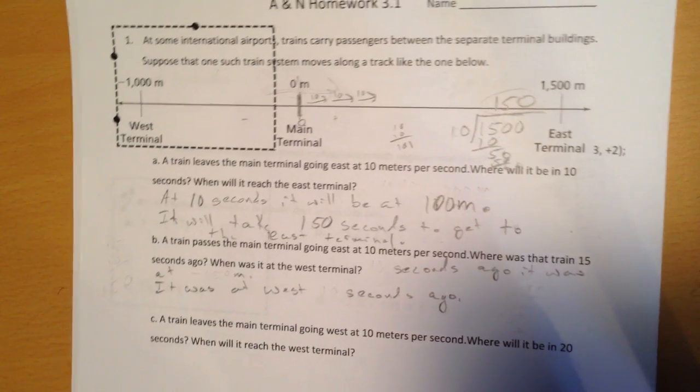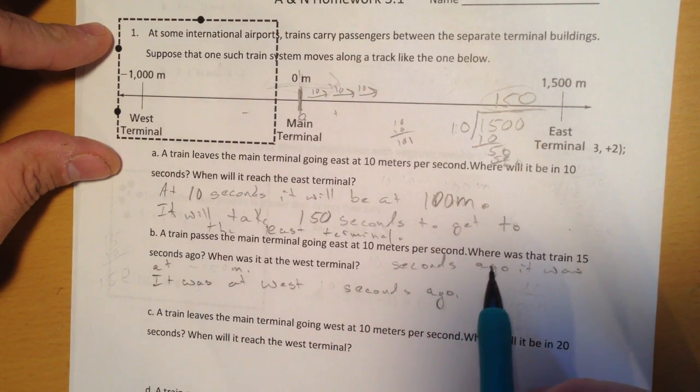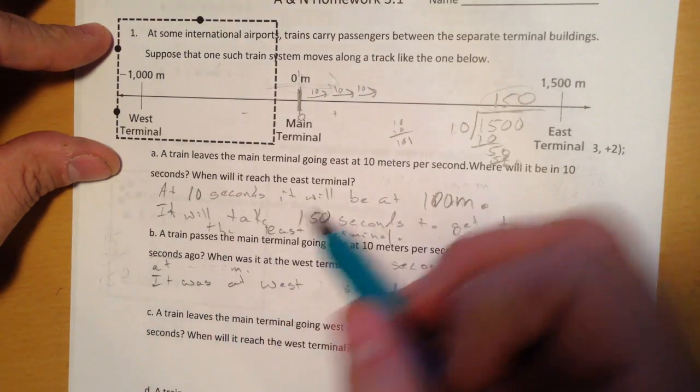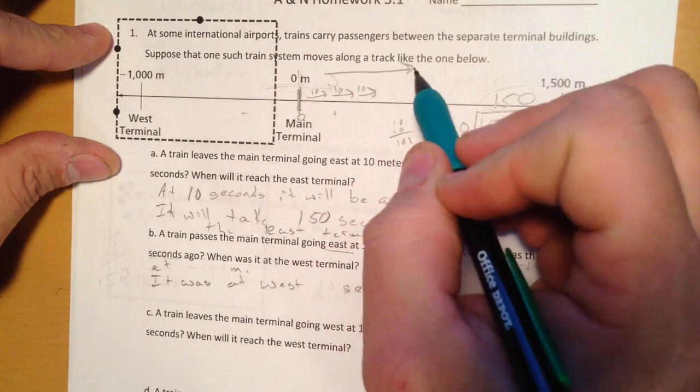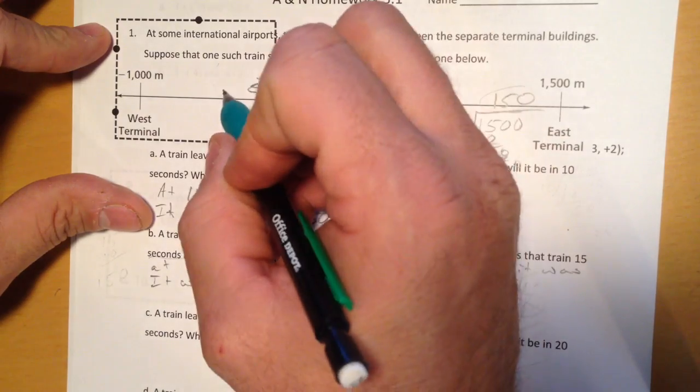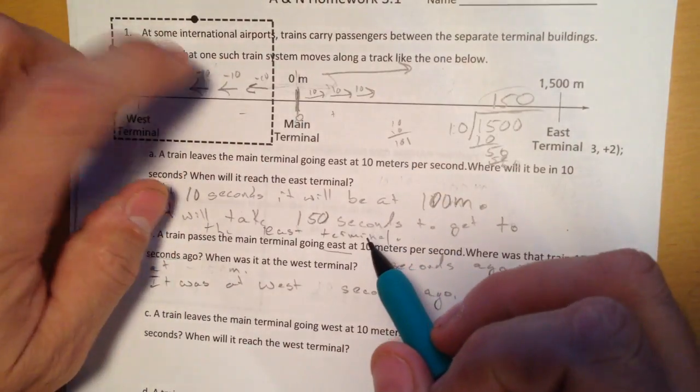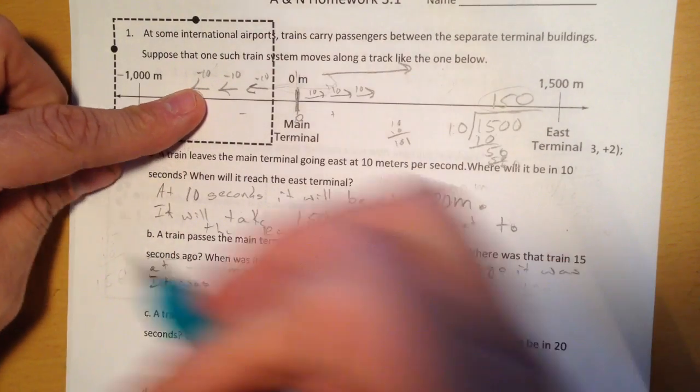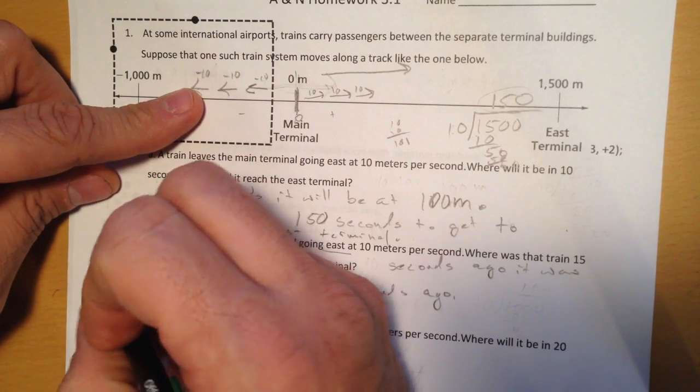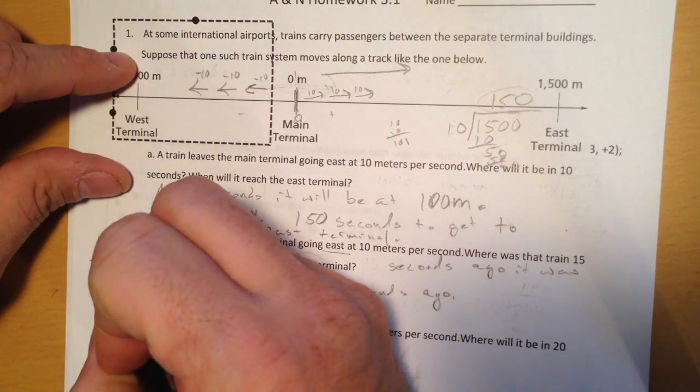Now question B here, the train passes the main terminal going east at 10 meters per second. Where was it 10 seconds ago? So it's going east, where was it 10 seconds ago? 10 meters per second, so it's negative 10, negative 10, negative 10—that's 3 seconds and that's negative 30. So if I do 10 meters per second times negative 10, that's going to give me negative 100.